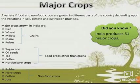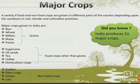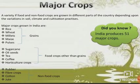A variety of food and non-food crops are grown in different parts of our country depending upon variations in soil, climate and cultivation practices. These are categorized into different categories: rice, wheat, millet, maize and pulses come under the grains category. Then sugarcane, oil seeds, tea, coffee and horticulture crops are food crops other than grains. Rubber, fiber crops, cotton and jute are non-food crops. India produces 50% of major crops.